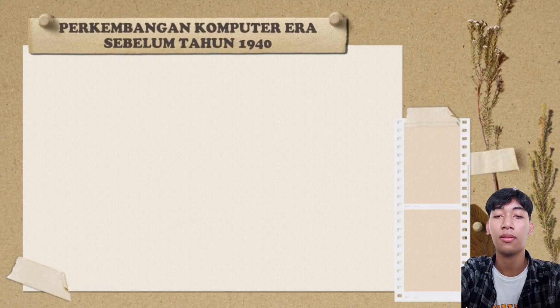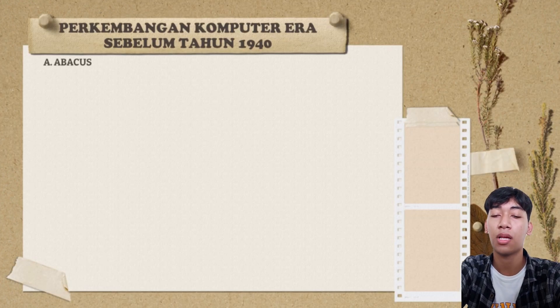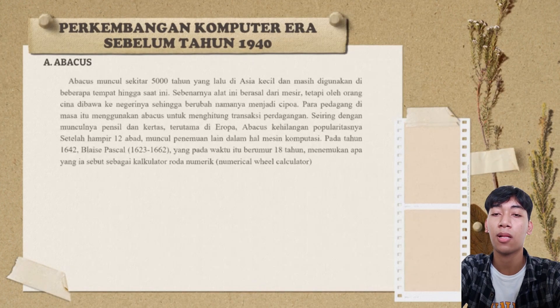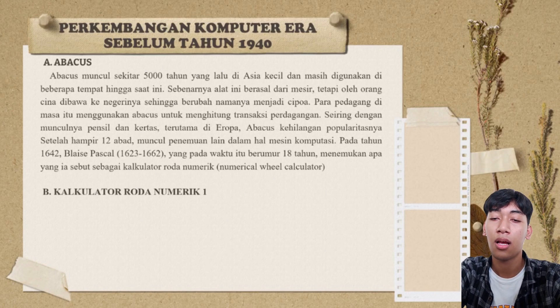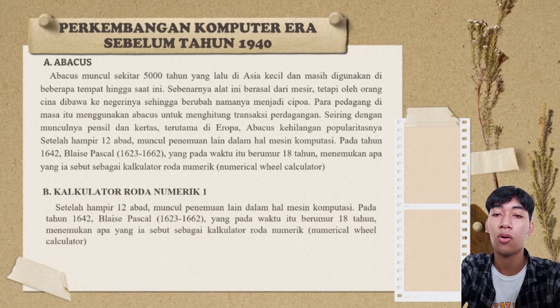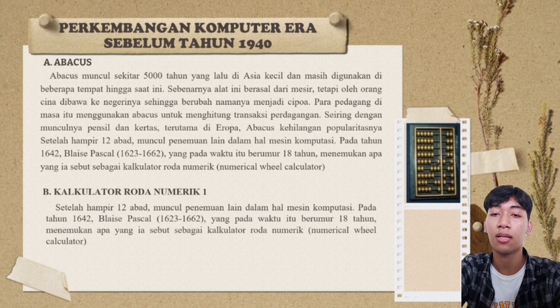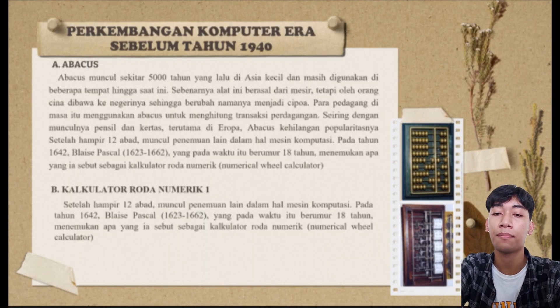Berikut ini perkembangan komputer sebelum tahun 1940. Pertama adalah Abakus. Abakus muncul sekitar 5.000 tahun yang lalu di Asia Kecil dan masih digunakan di beberapa tempat hingga saat ini.